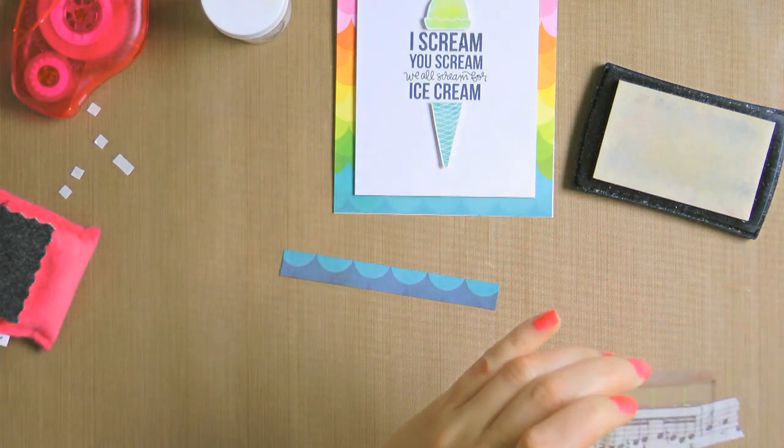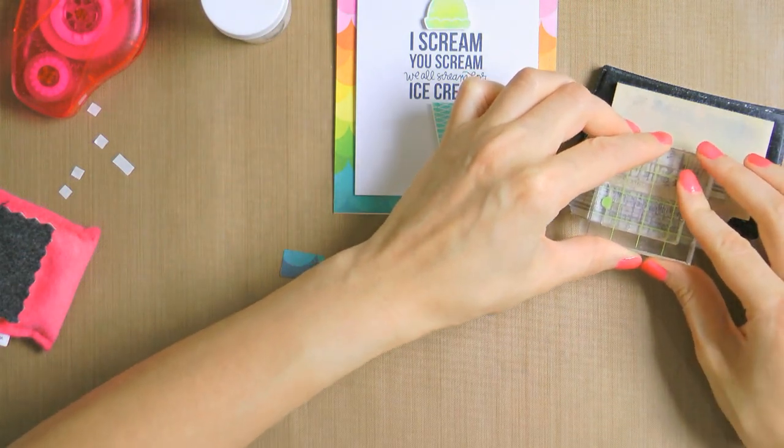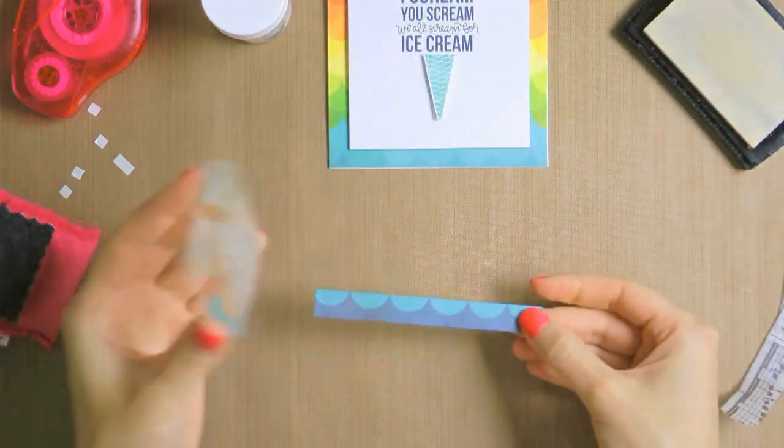I pressed it onto the clear embossing ink pad, removed the mask and stamped it onto the paper. I then added some white embossing powder and heat set it with my heat gun.